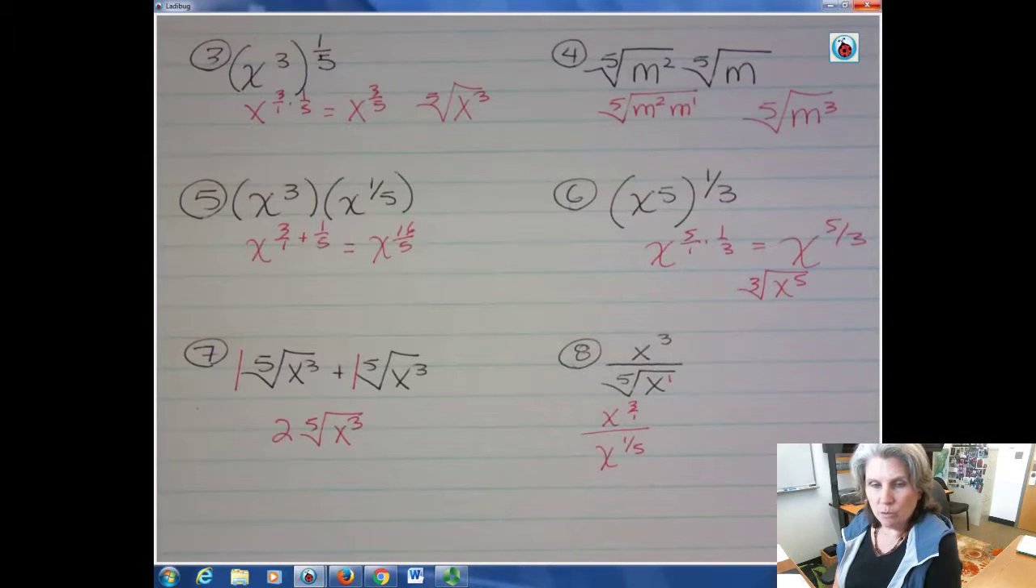And the last one, you're actually dividing. Remember what you have here is x to the three over one and x to the one fifth. Because this power is one and the root is five. Remember the root is our denominator. The power in here is our numerator. And so the rule when you're working with exponents is that you subtract if you have the same base. And so I would actually subtract those.